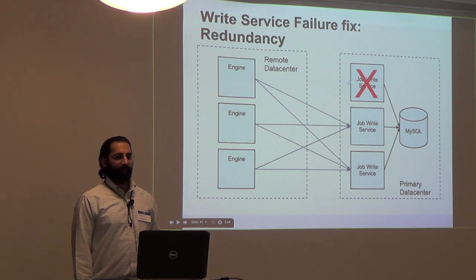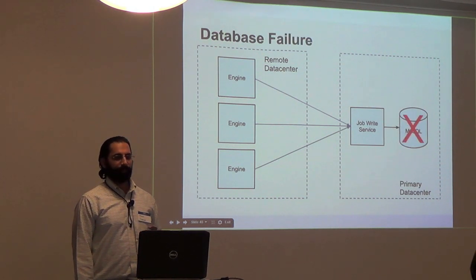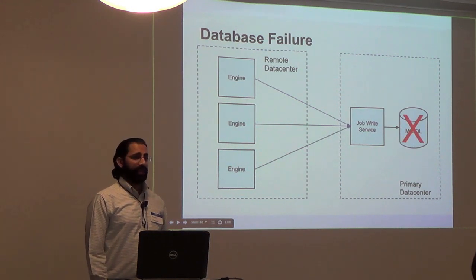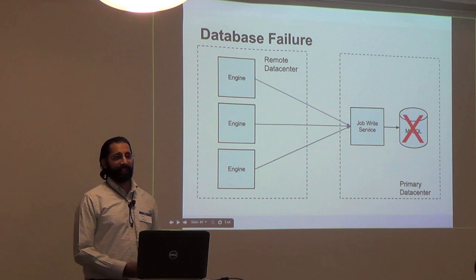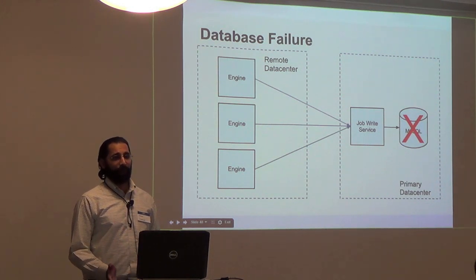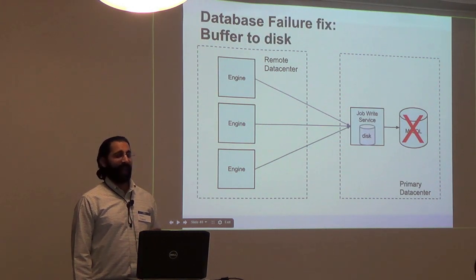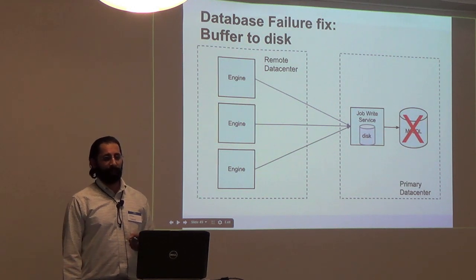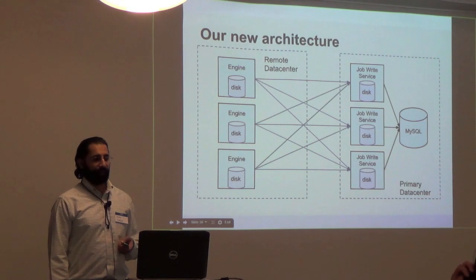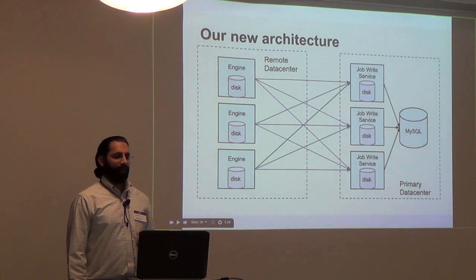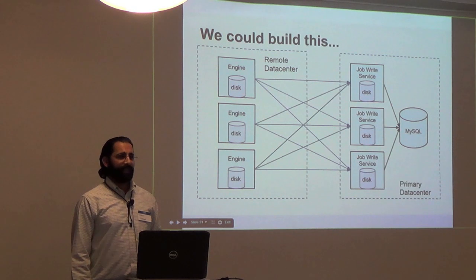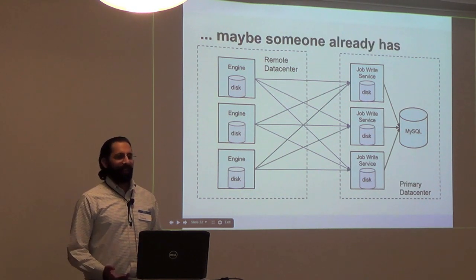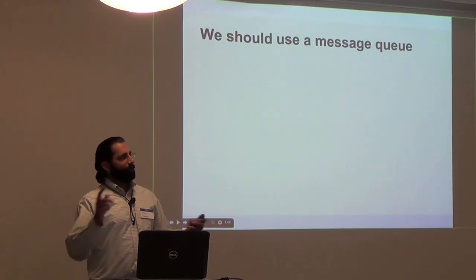We can add redundancy with additional job-write service instances so that if one goes down, clients can communicate with another. The database may fail, but we can add disk buffers and retry queues to the service as well. If you put that all together, you get an architecture that could meet our needs. We could build this, but it seems like a general solution to a general problem. Maybe somebody else has already built this. We should use a message queue.